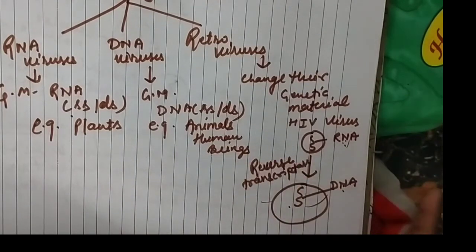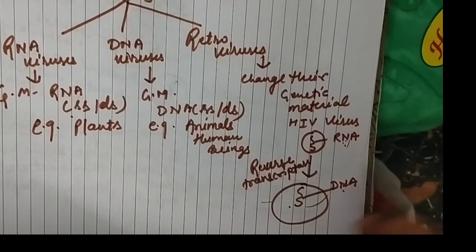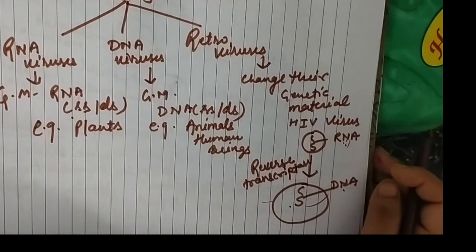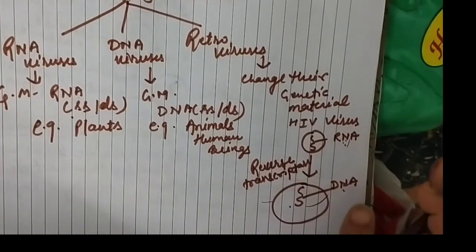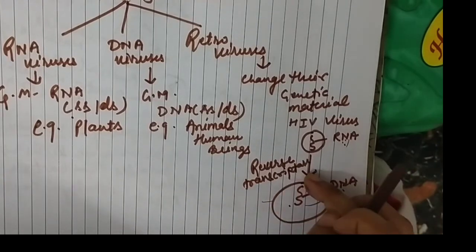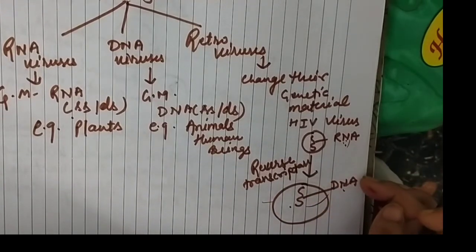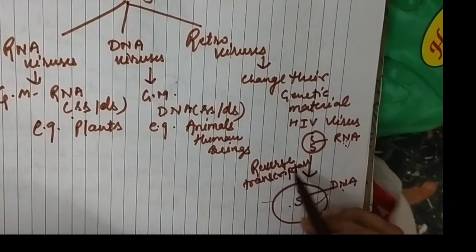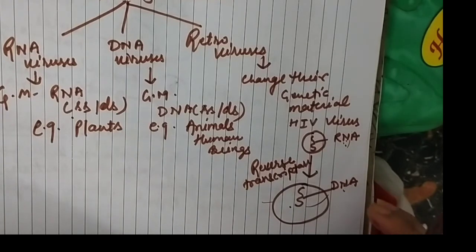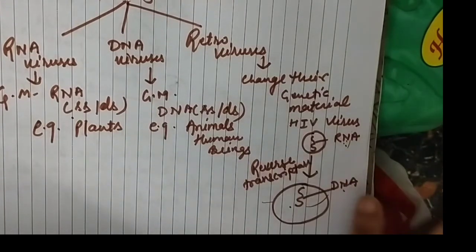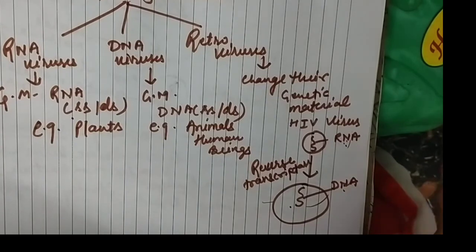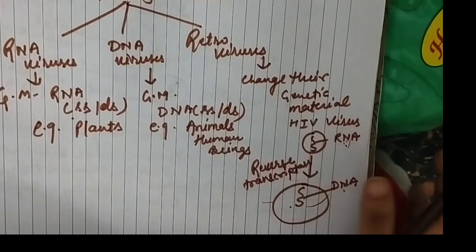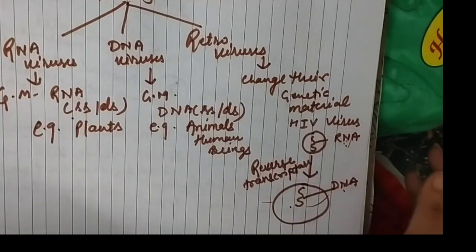Normally, if you study in 12th standard, there is a process in the central dogma of molecular biology or in protein synthesis where DNA changes into RNA — this is known as transcription. When we study the reverse process, where RNA changes into DNA, it is opposite to transcription, so it is known as reverse transcription. That is everything about viruses and their types. Next time I will discuss viruses in more depth, along with two or three remaining concepts of this chapter. Till then, goodbye. Have a beautiful day.